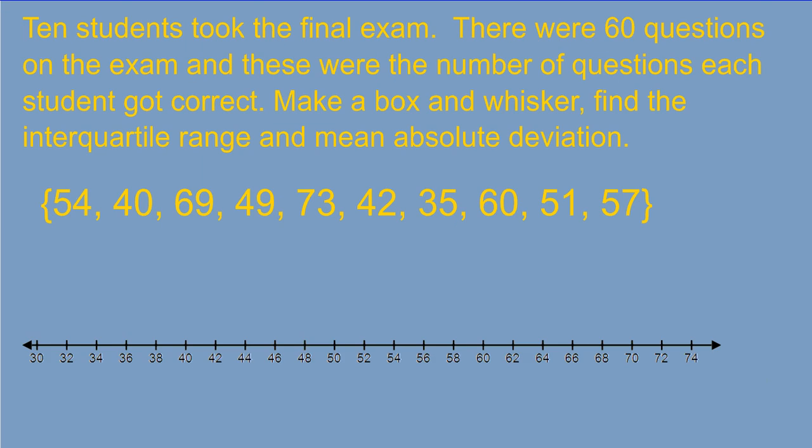Let's try one on your own. Here's a problem for you to practice. 10 students took the final exam. There were 60 questions on the exam, and these were the number of questions each student got correct. Make a box and whisker, find the interquartile range and mean absolute deviation. Okay, there must have been a lot of bonus because it looks like a few of them got more than 60 questions correct. Maybe this was the percentages. But go ahead and use this set of data to construct a box and whisker plot and find the interquartile range as well as mean absolute deviation. Then pause your screen, and we'll go over the answer.